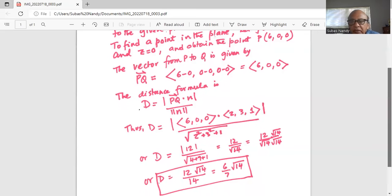So this reduces to the distance is 12 multiplied by square root of 14 in the numerator, in the denominator 2 square root of 14, so square root of 14 times square root of 14, which is basically 14.